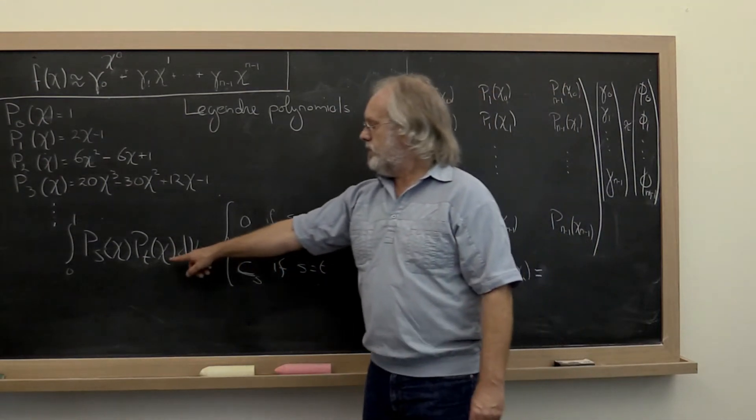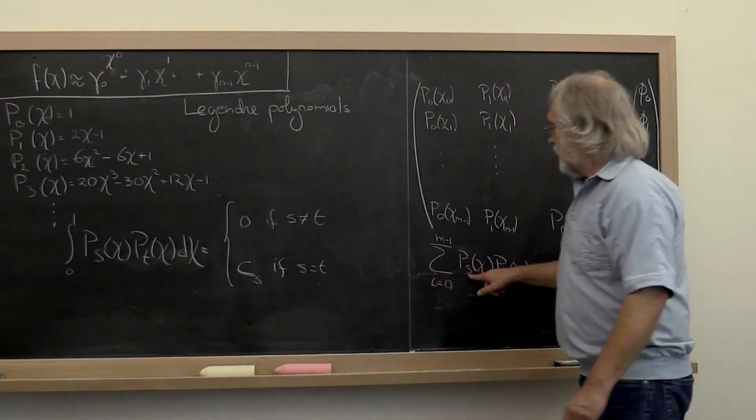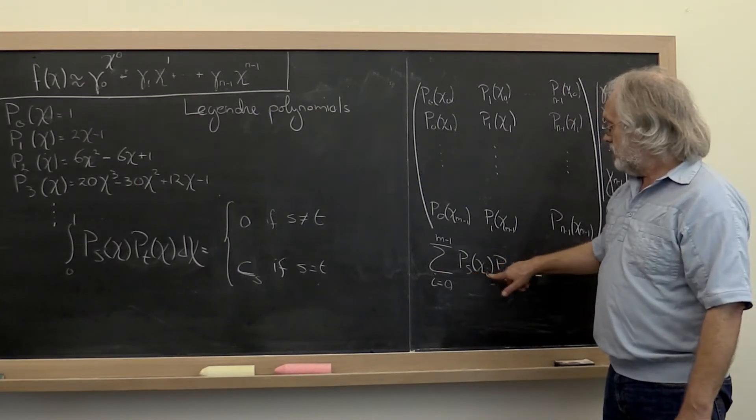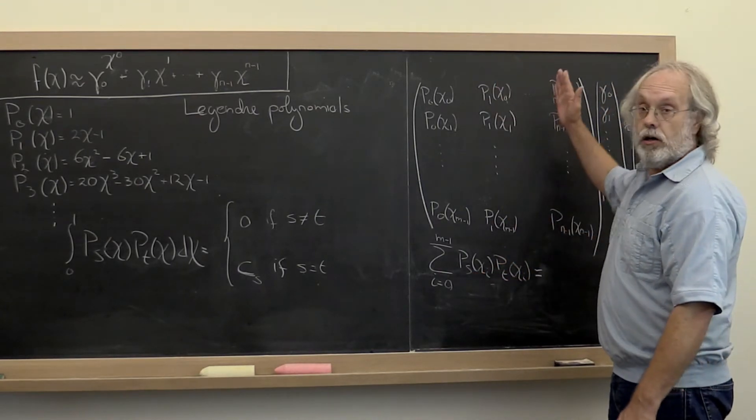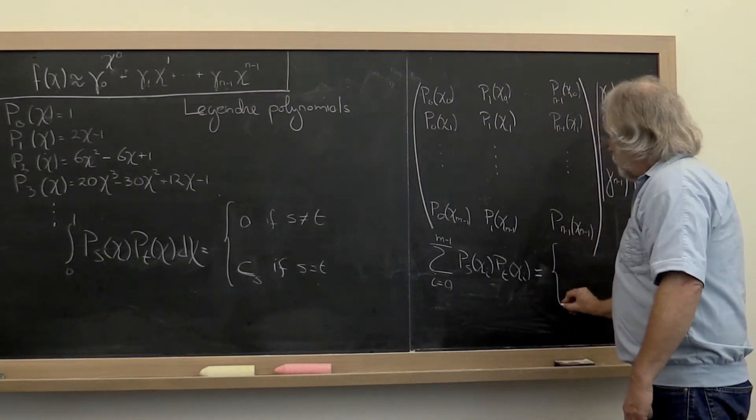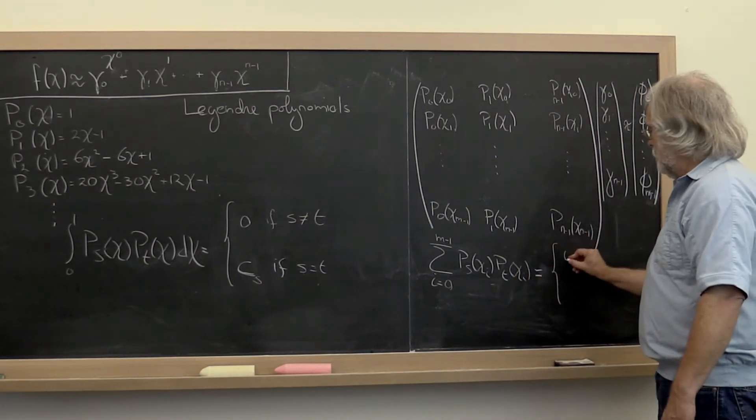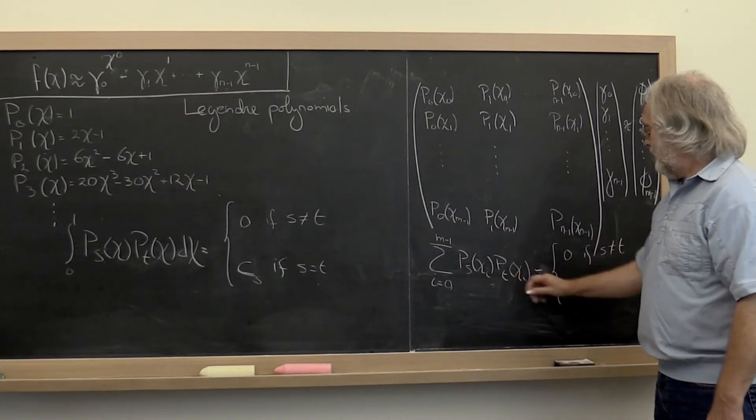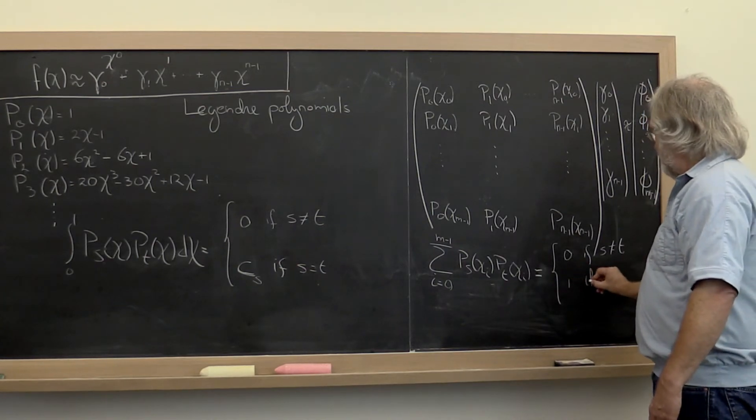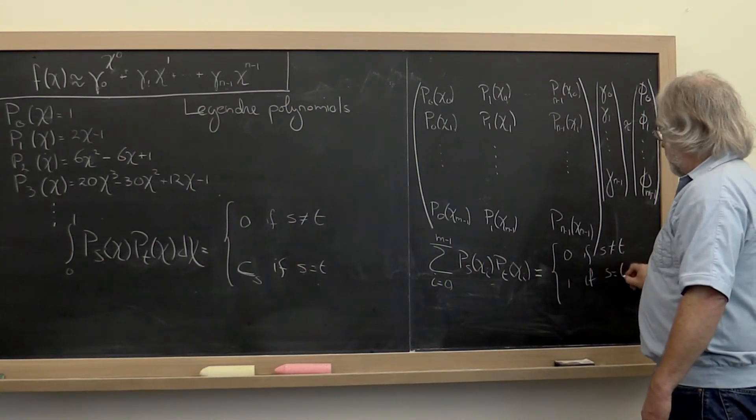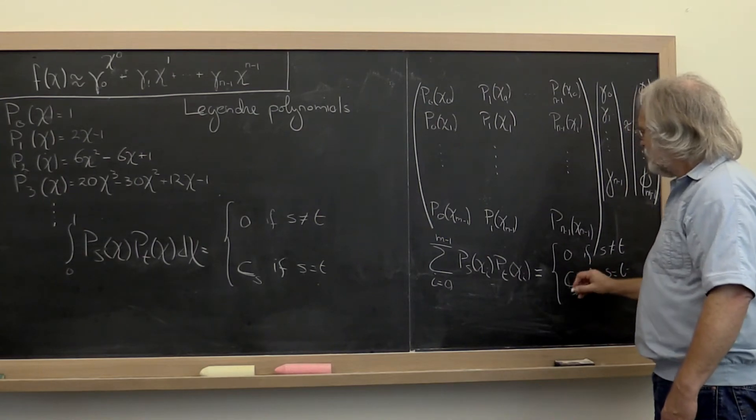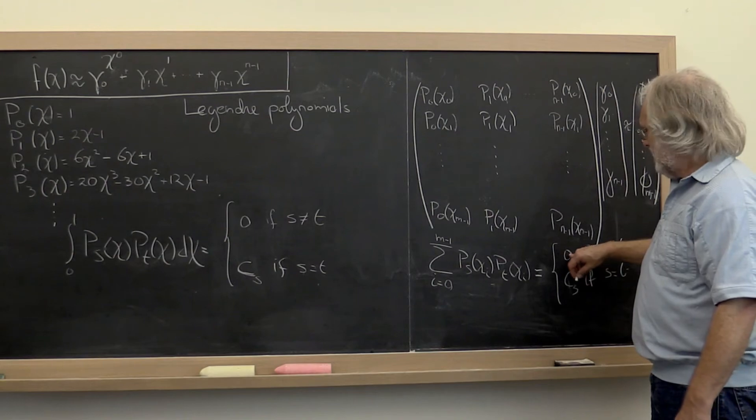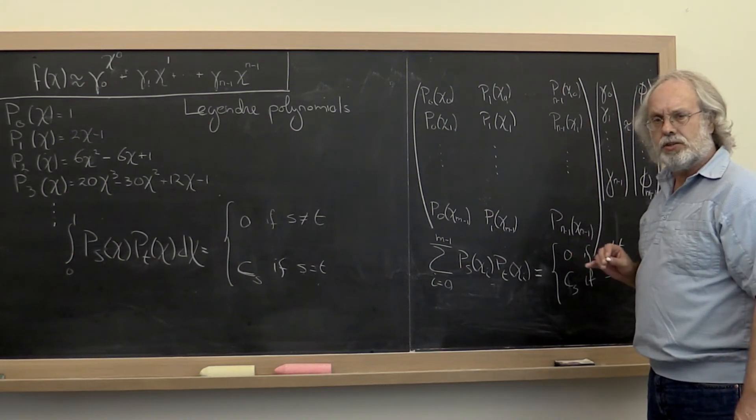The equivalent of this integration here, but now with these sampled polynomials, is to take the dot product of these columns. So what we would hope is that this is equal to 0 if s is not equal to t, and equal to some constant if s is equal to t. Now it turns out that this isn't exactly 0 typically, but it ends up being approximately 0. And that's good enough.